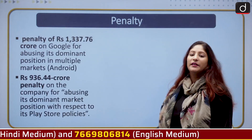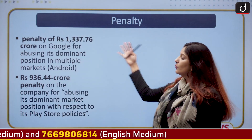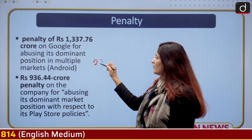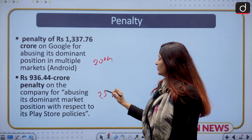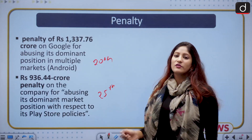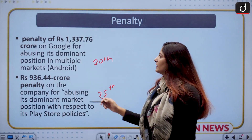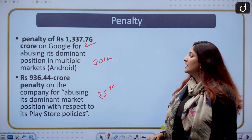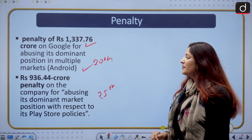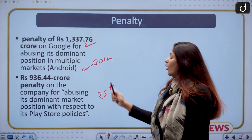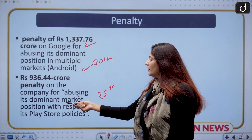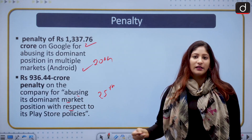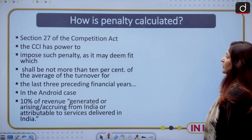Let us talk about the penalty. The penalty has been provided in two rounds: first on 20th October and second on 25th October. The first penalty was rupees 1337.76 crore for abusing its dominant position in multiple markets through Android. The second was rupees 936.44 crore on the company for abusing its dominant market position with respect to its Play Store policies, which were not letting other apps develop their marketing on Play Store.